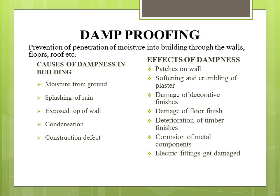Moving on to the most important topic: damp proofing. Damp proofing means the prevention of penetration of moisture into buildings through walls, floors, roofs, etc. The major causes of dampness in buildings are moisture from ground, splashing of rain, exposed top of walls, condensation, and construction defects. The effects of dampness include patches on walls, softening and crumbling of plaster, damage of decorative finishes, damage of floor finish, deterioration of timber finishes, corrosion of metal components, and damage of electric fittings.